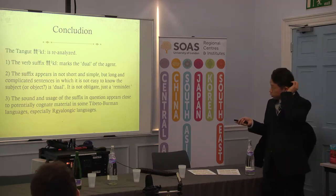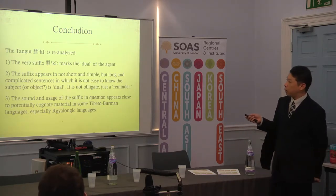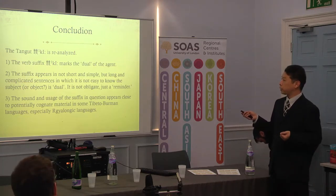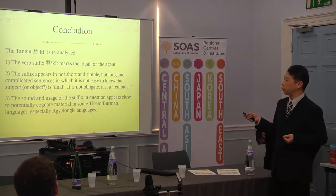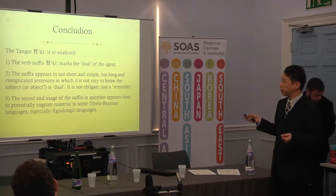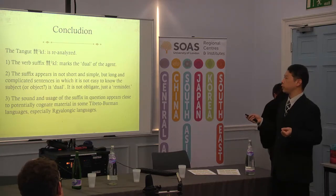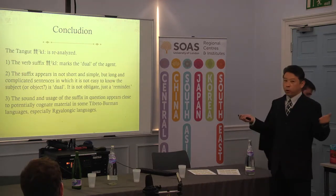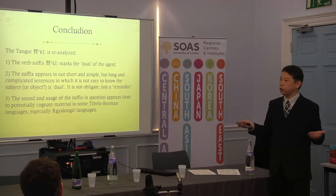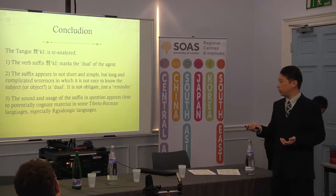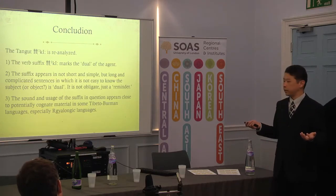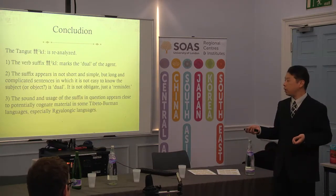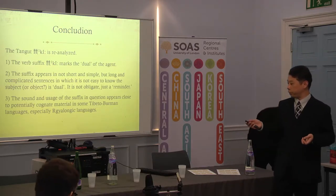This is my conclusion. Actually, this qi marks dual of the agent. And the suffix appears not in short and simple, but in long and complicated sentences. Its function is just as a reminder. I don't know the old language of Tibetan well, but I think such a type of expression for dual markers is close to Tibeto-Burman languages.